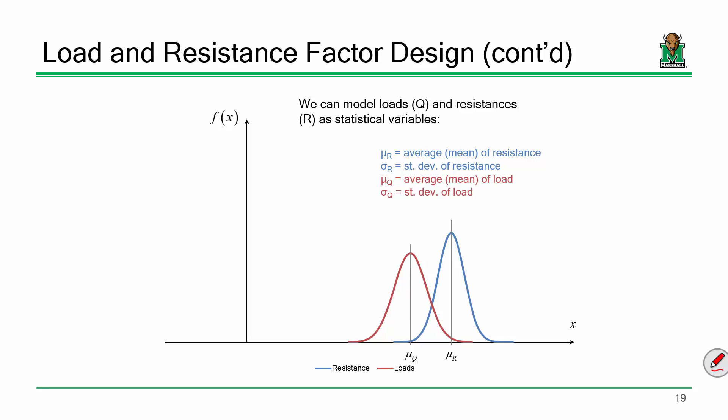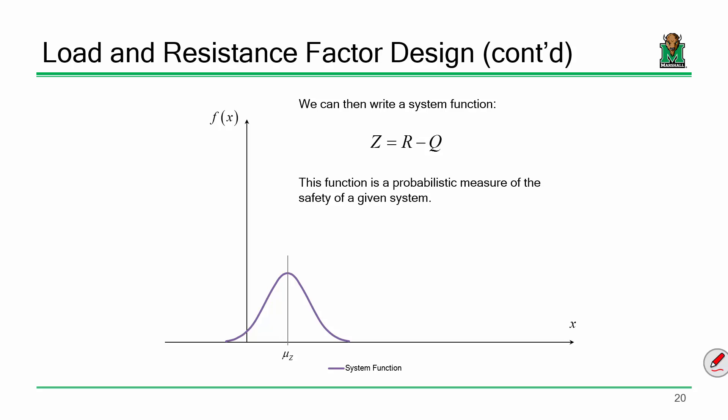This is a resistance curve, this is a load curve. What I'm going to do is calculate a third one: resistance minus the loads. That gives me a curve I'll call a Z or system function. In the end, I'm looking at a curve that represents the resistance minus the loads. By its very nature, you've got some of that curve trailing over on the other side of the y-axis — most values are positive, but some are negative.